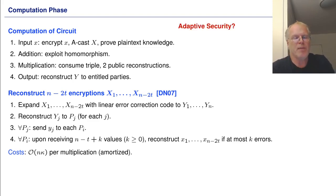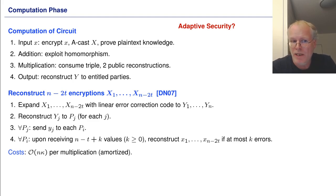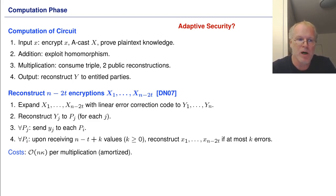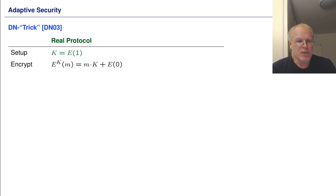Now is this adaptively secure? Of course it's not. If an honest party provides some input, it ACASTs an encryption of the input. In the simulation, the simulator does not know that input. If the party is honest, the simulator would present a random encryption to the adversary, but later the adversary could corrupt that party. Then the simulator needs to explain how this encryption contains the input value of that party, and of course the simulator cannot. So this is not adaptively secure.